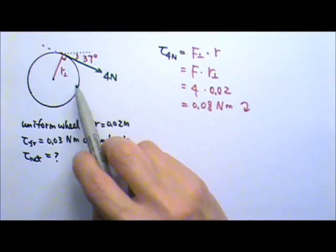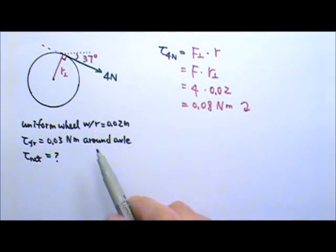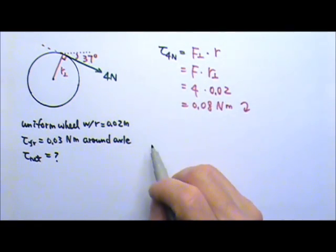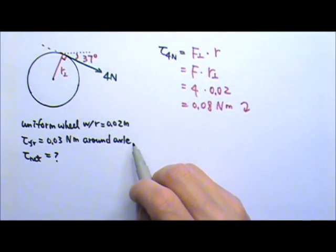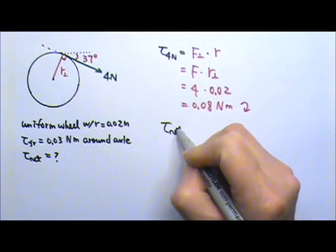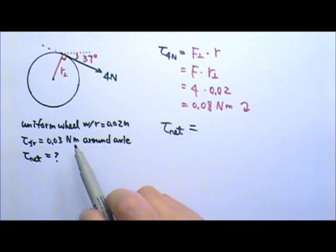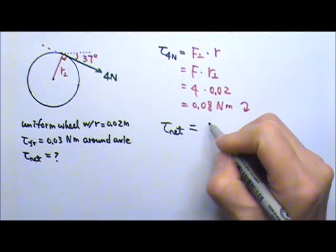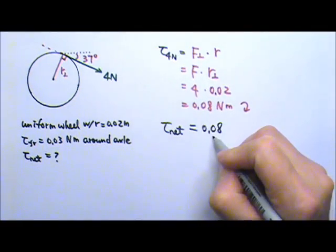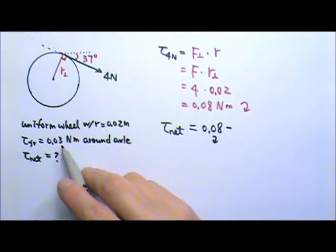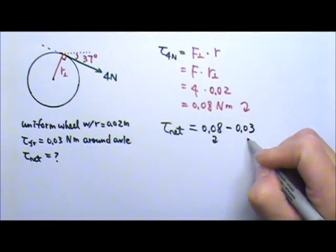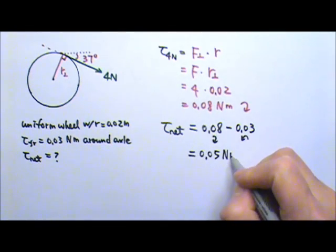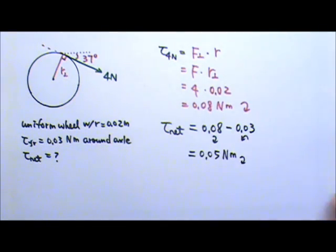So if the 4N force is going to cause the wheel to rotate clockwise that means the friction torque is going to go which way? It's going to go opposite direction, counterclockwise. Therefore the net torque will be the bigger side minus the smaller side because they work against each other. They are in the opposite directions. So it will be 0.08 clockwise torque minus the opposite direction 0.03 counterclockwise torque. And this is going to give us 0.05 Nm net torque in the clockwise direction.